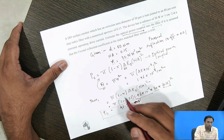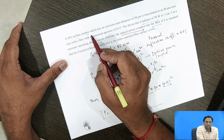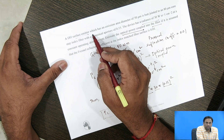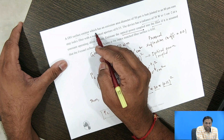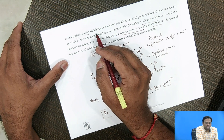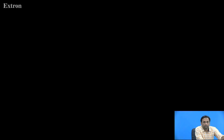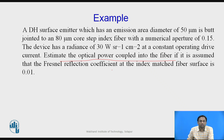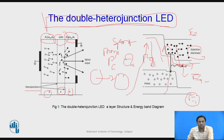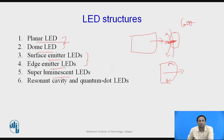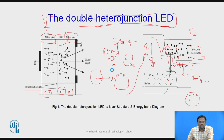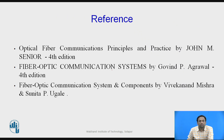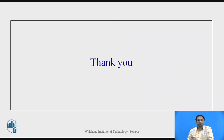This completes the example for the double hetero-junction surface emitter LED. Thank you.